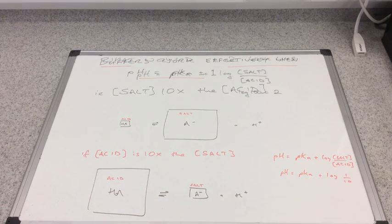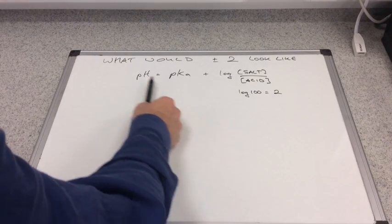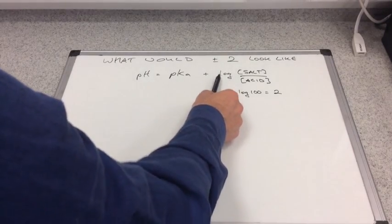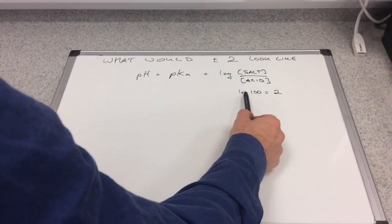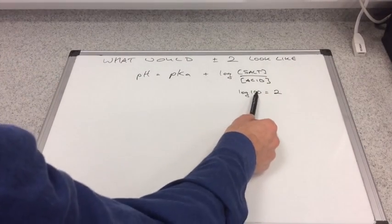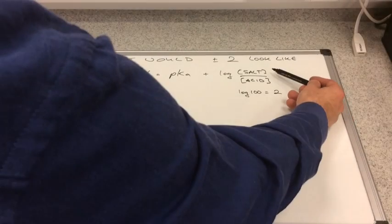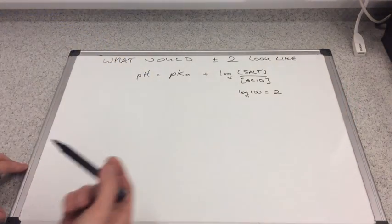Let's quickly consider what plus or minus 2 would look like. Here's Henderson-Hasselbalch again. If we want to get plus 2 for this whole term here, we effectively need to work out log of 100, that's going to give us a 2. In other words, the salt concentration would need to be 100 times bigger than the acid concentration.